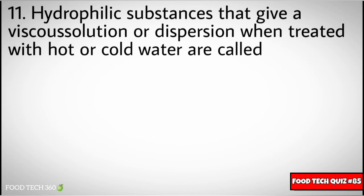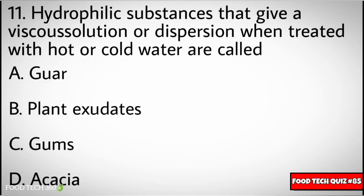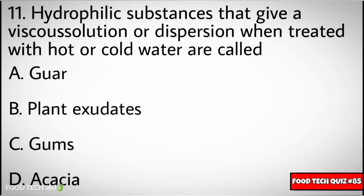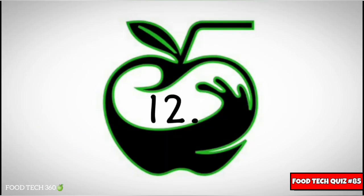Question number eleven: hydrophilic substances that give a viscous solution or dispersion when treated with hot or cold water are called. Options: A) guar, B) plant exudates, C) gums, D) acacia. Correct answer: C) gums.